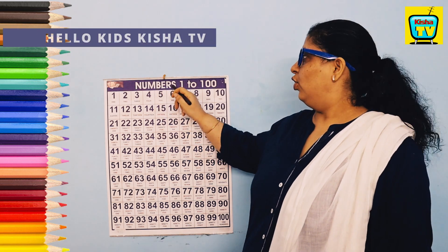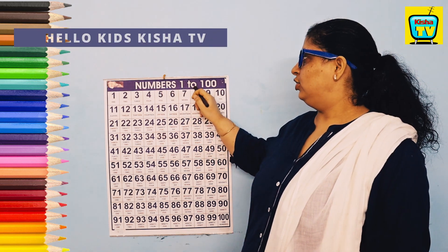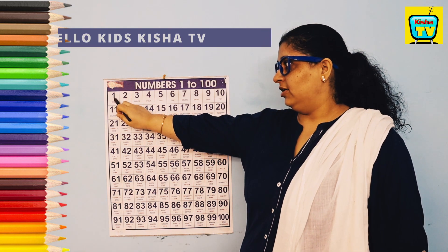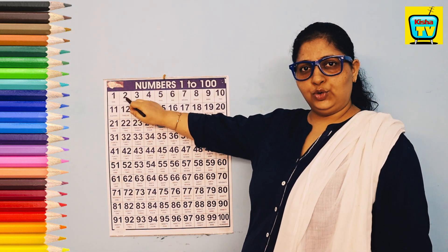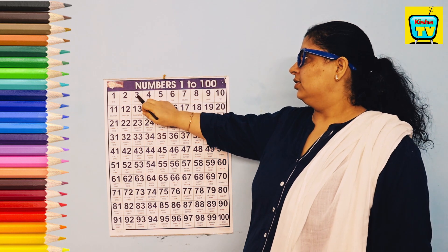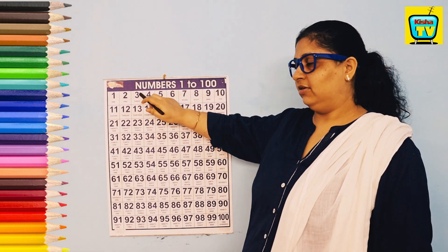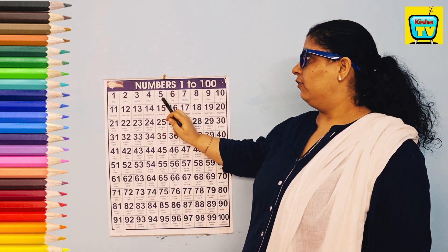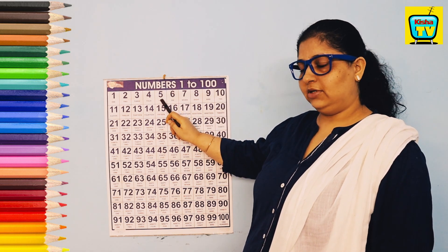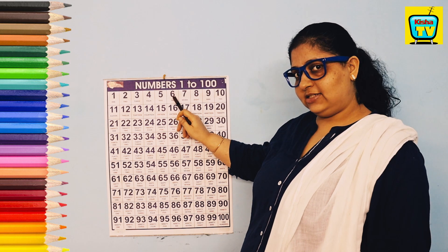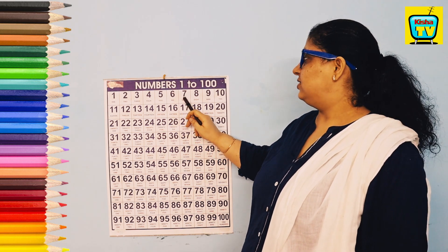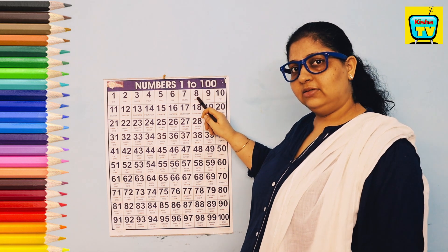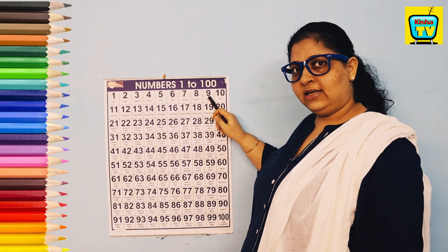Numbers. 1 to 100. 1, 2, 3, 4, 5, 6, 7, 8, 9, 10.